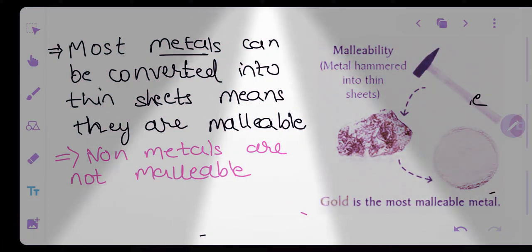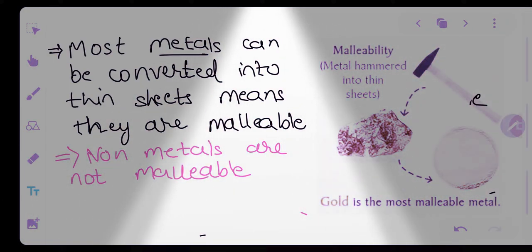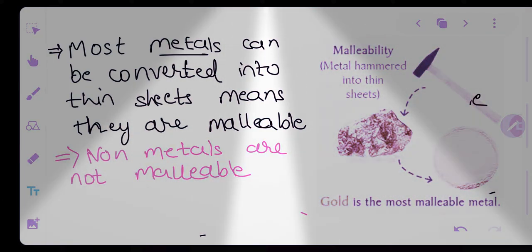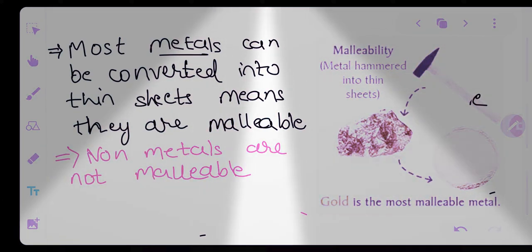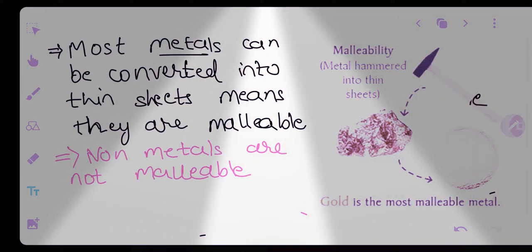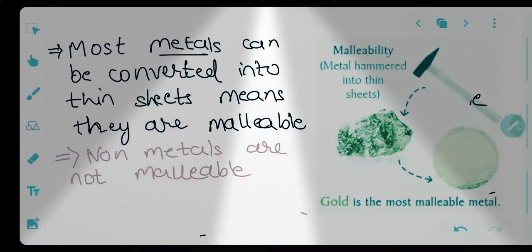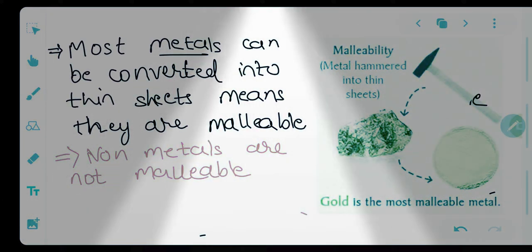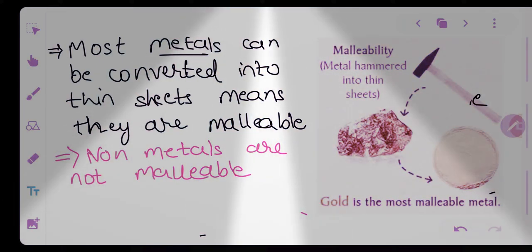Malleable property: malleability is the property of a metal by which you can convert most metals into thin sheets. You can convert a metal into a rectangular sheet by hammering it — the molecules spread out and you can change its shape into a circle or sheets. Gold is the most malleable metal. Non-metals, however, are non-malleable.